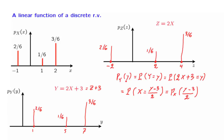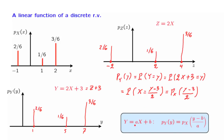We can generalize this calculation. More generally, if we have a linear function of a discrete random variable x, the PMF of the random variable y is given by this formula in terms of the PMF of x. The derivation is the same: we use b instead of the specific number 3, and a general constant a instead of 2. This formula describes exactly what we did graphically. The factor a serves to stretch the PMF by a factor of a, and the term b serves to shift the PMF by b.